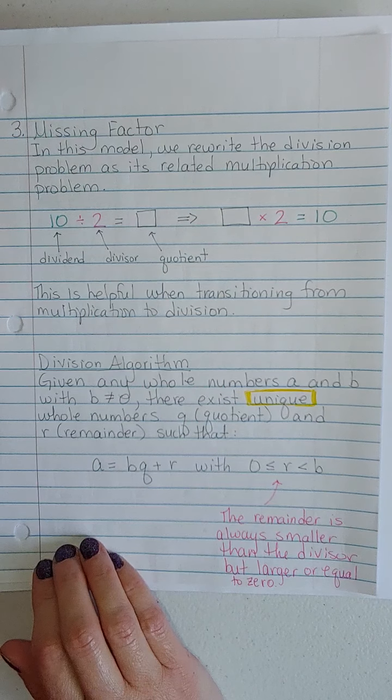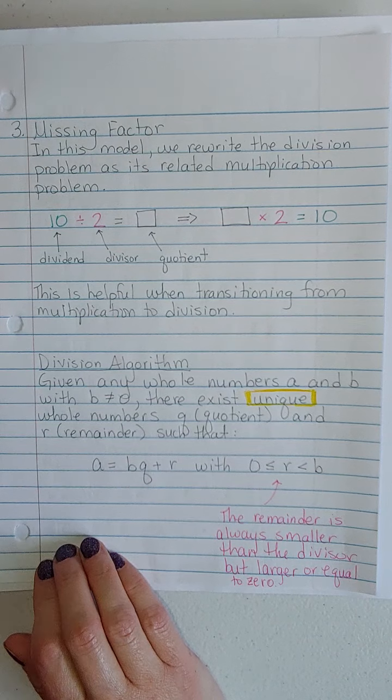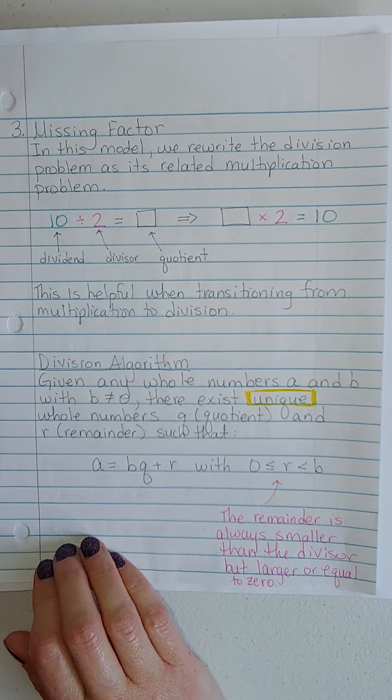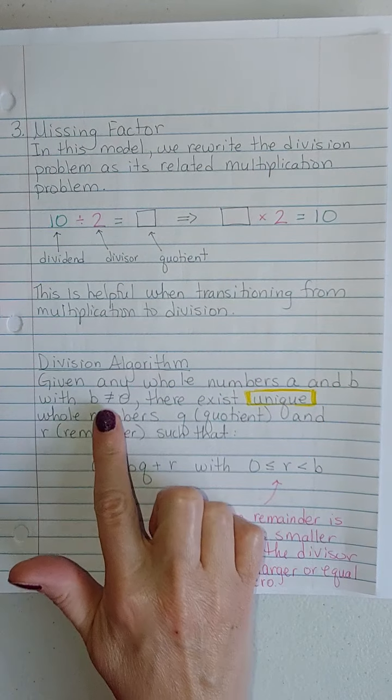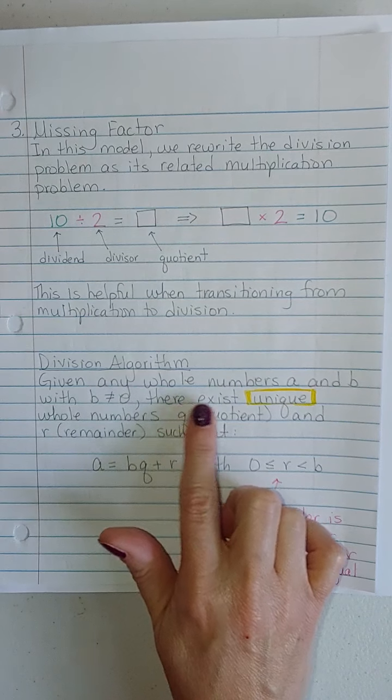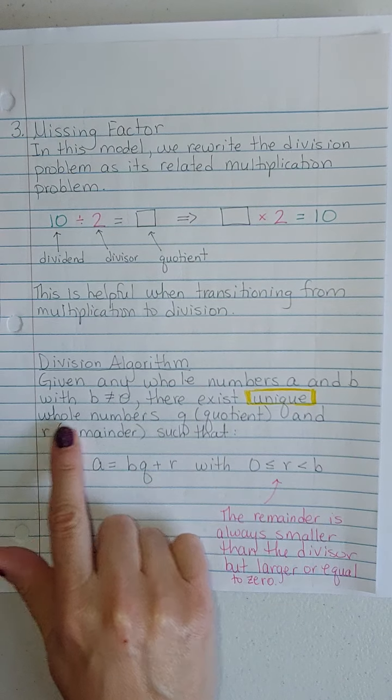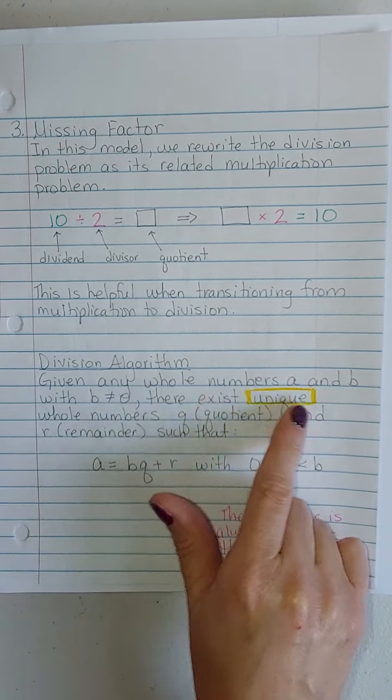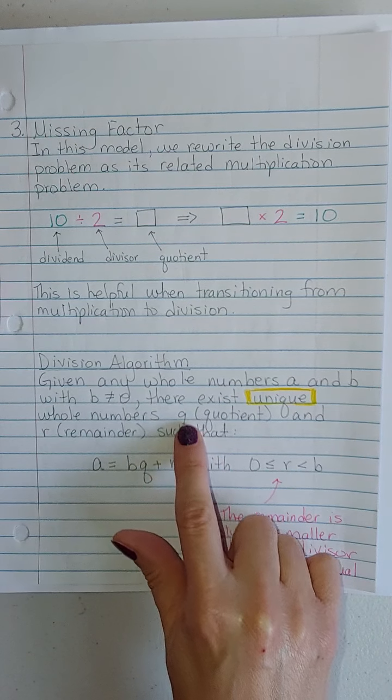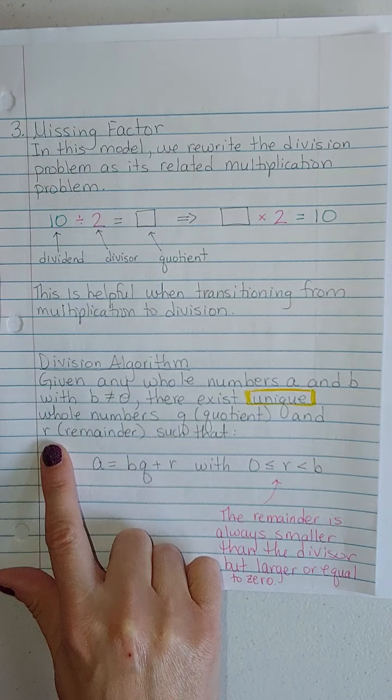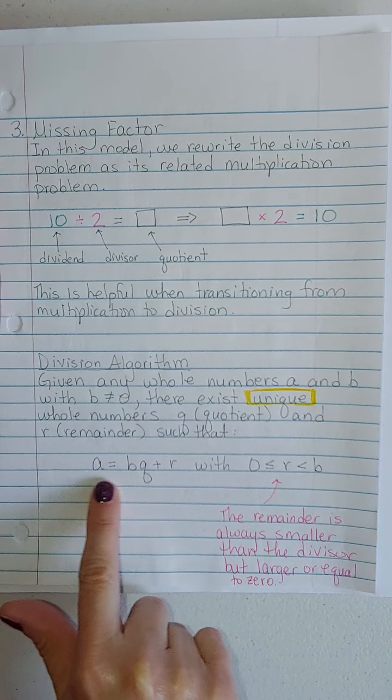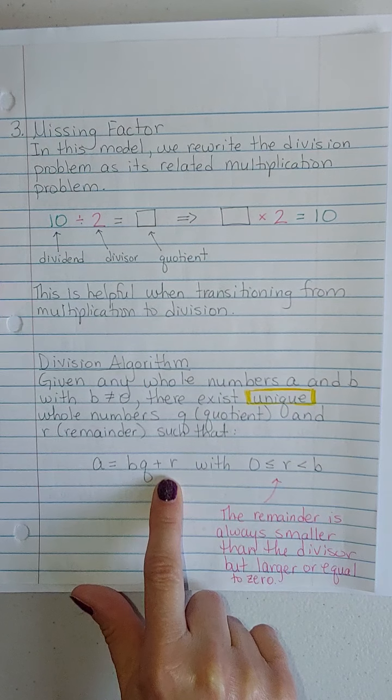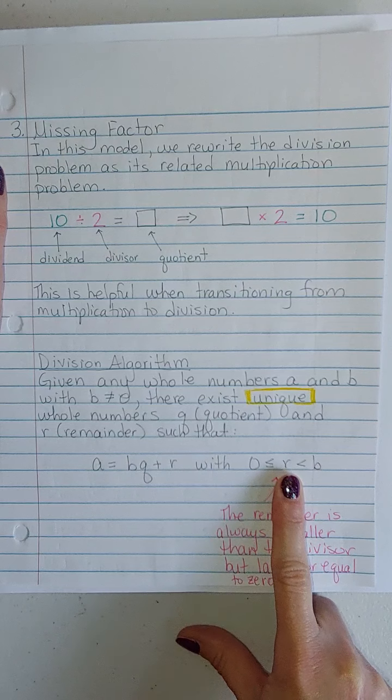The division algorithm says that, given any whole numbers A and B, where B is not 0, there exists unique whole numbers Q for the quotient and R the remainder, such that this equation is true for R between 0 and B.